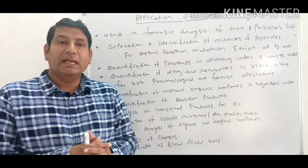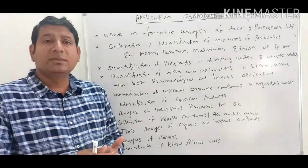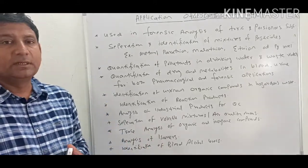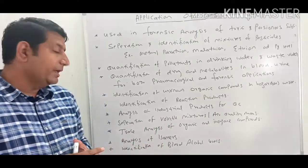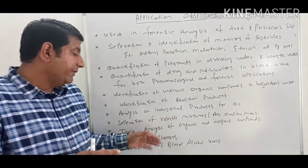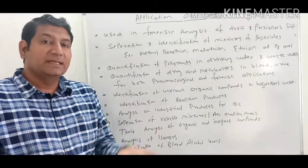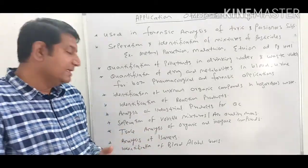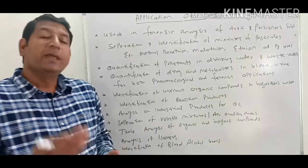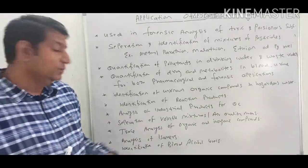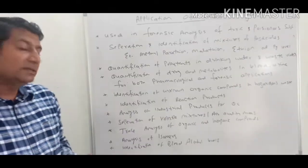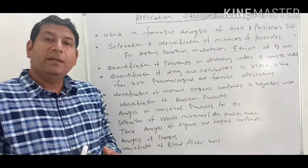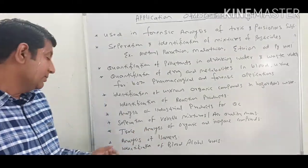Another application is analysis of isomers. Isomers are very identical to each other, and for their separation, identification, and quantification, a very sensitive technique is required. Although it can be done by other techniques like HPLC, gas chromatography is nowadays used for identification of various isomers, and the type of method depends upon the nature and type of the isomers.